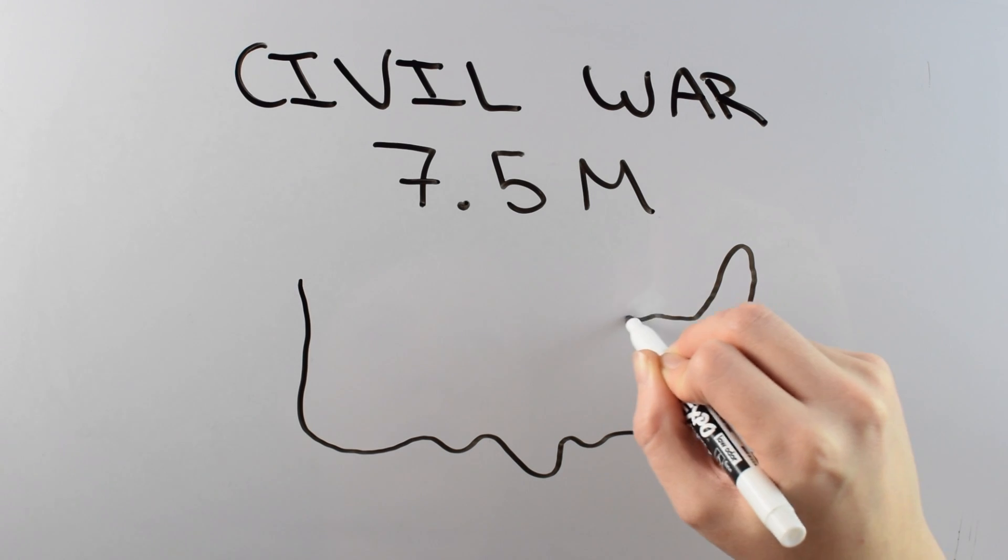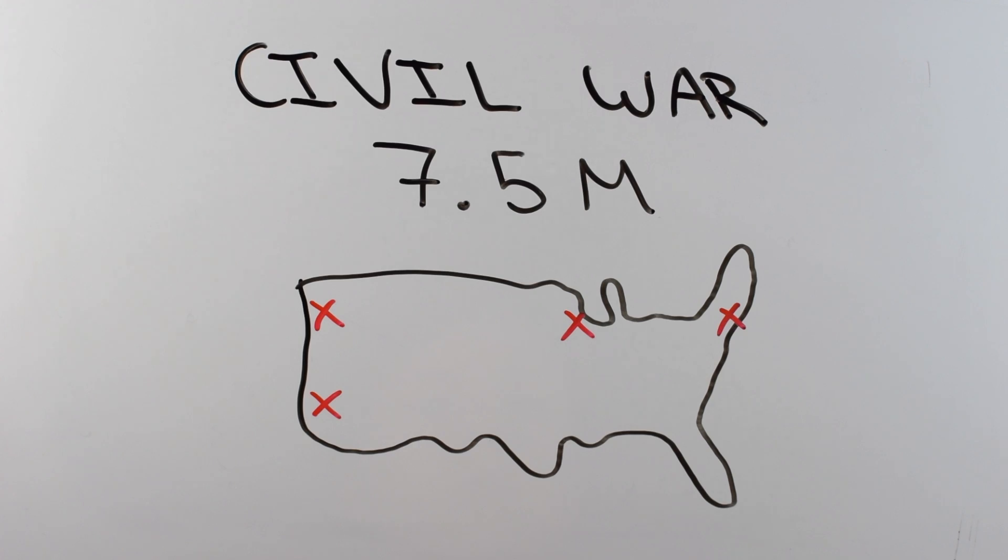7.5 million is the population of Seattle, LA, Chicago, and Boston all combined.